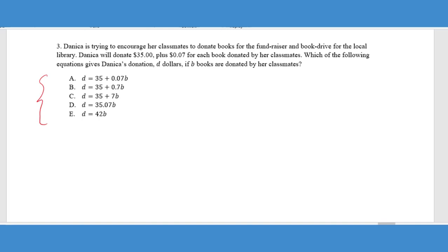So this is your classic ACT translation problem where you're actually trying to take the word problem and create an equation, a formal textbook equation that you probably learned in your Algebra 1 class to represent the situation that the word problem is implying here. So it says Danica is trying to encourage her classmates to donate books for the fundraiser and book drive for the local library. Danica will donate $35, so just $35 straight off the bat. Let's kind of throw that in there.